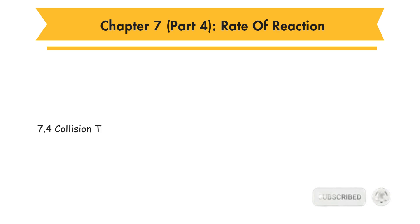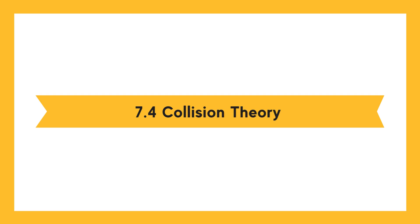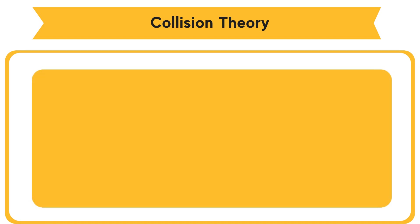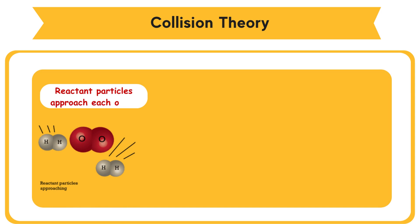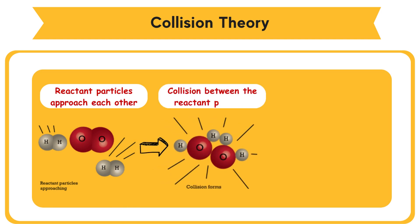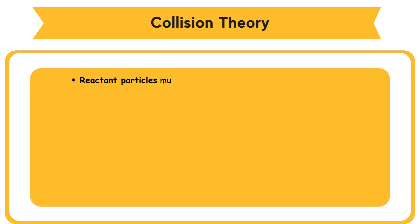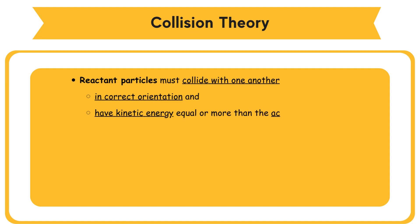In this part, you will learn 7.4 Collision Theory. When two different reactants are mixed, the reactant particles will collide with each other. During these collisions, the chemical bonds in the reactants break apart and form new chemical bonds in the products. According to the collision theory, the reactant particles must collide with one another in correct orientation and have kinetic energy equal to or more than the activation energy in order for new products to be formed.